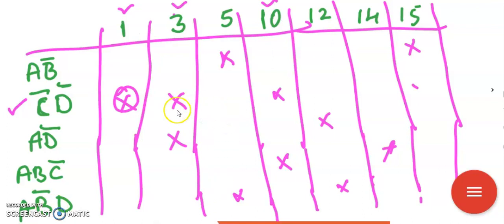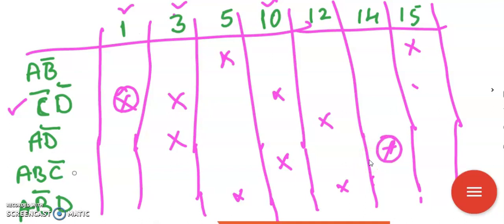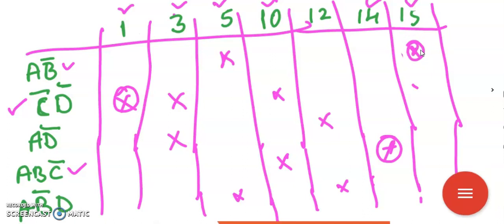Column 3 was already covered. Column 5 has two cross marks so skip it. Column 10 is already covered. Column 12 has two cross marks, skip it. Column 14 has only one cross mark, so that is essential — use that term. It covers 14 and 10, which is already covered. Scanning column 15 — this also becomes essential. It covers 15 and 5. So terms 1, 3, 5, 10, 14, and 15 are covered, but 12 is not covered.